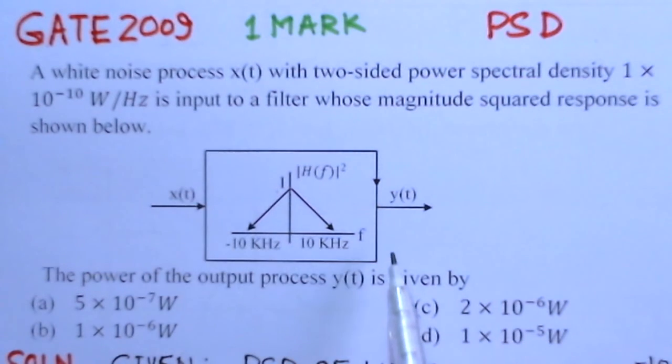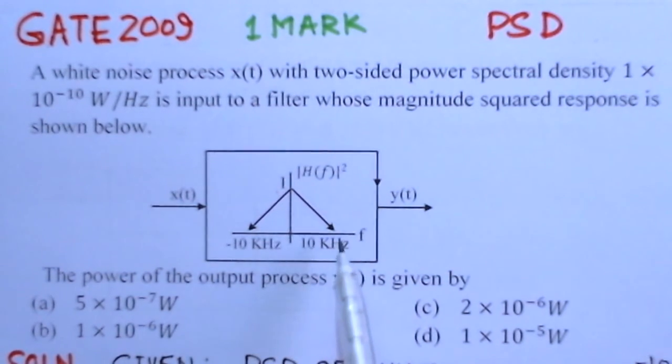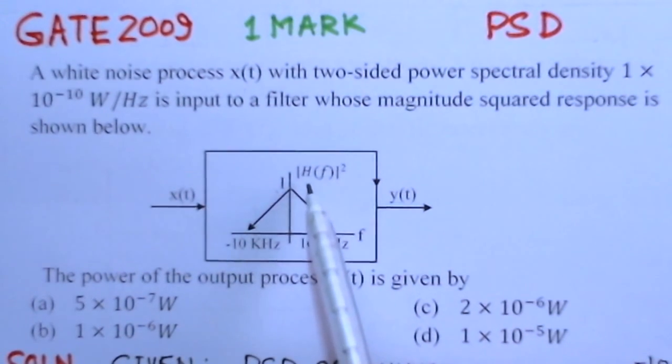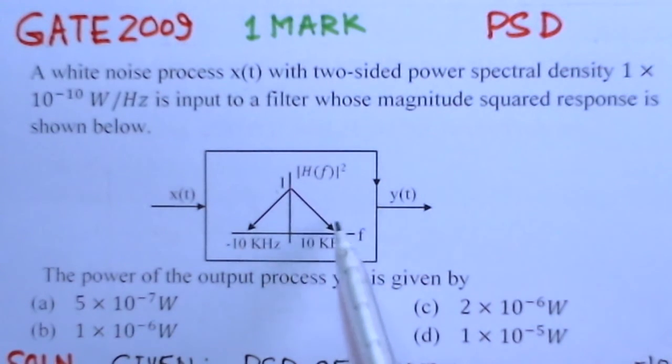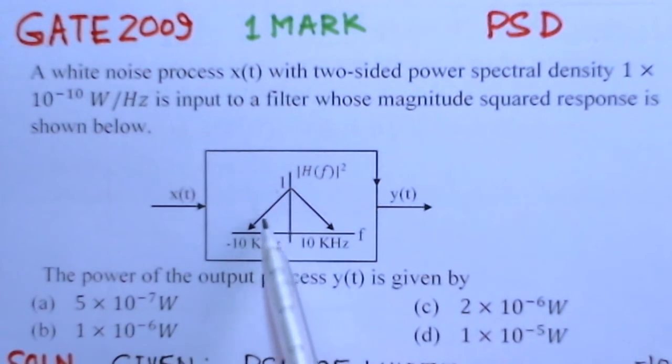So this is the input applied to the filter whose magnitude squared response is shown here, that is |H(f)|² and y(t) is the output here. These are the band of frequencies: 0 hertz, minus 10 kilohertz on the negative frequency side, and plus 10 kilohertz on the right hand side.